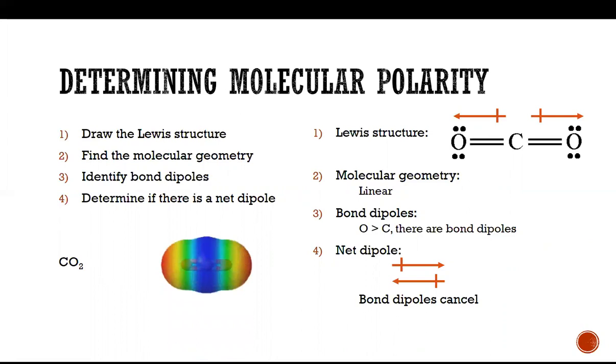This is what it would look like if we were to give it the different colors. Notice that there is a difference in the center of the molecule that has a partially positive charge. However, there are no ends that are separate from one another. On both ends, they are both red, indicating that there's no net separation of charge.